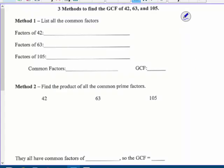Three methods to find the GCF of three numbers at once. So list method. 1 times 42. 2 times 21. 3 times 14. 4 does not go into 42. 5 doesn't. 6 times 7. So that's all the factors of 42.